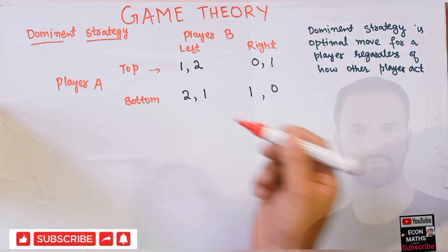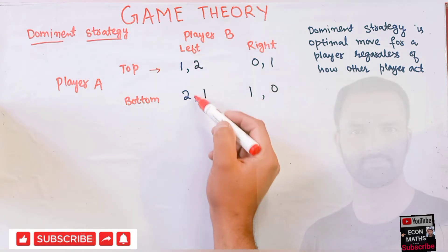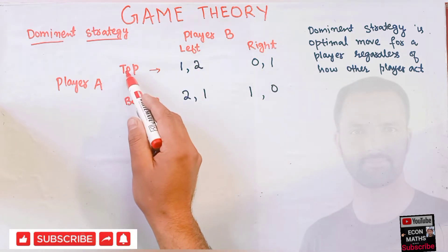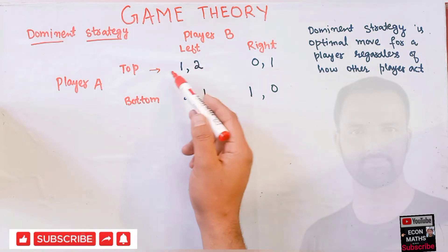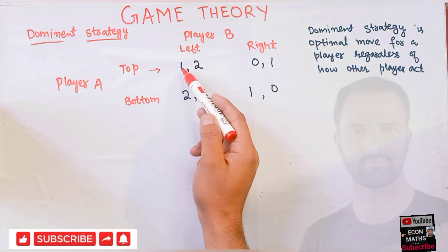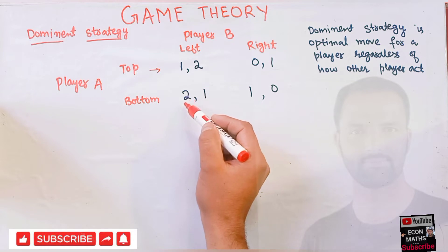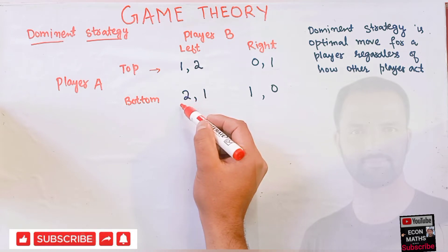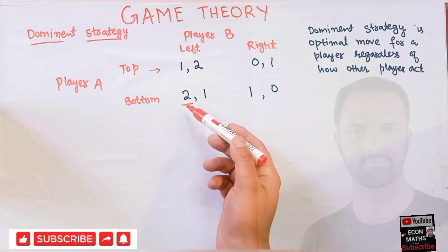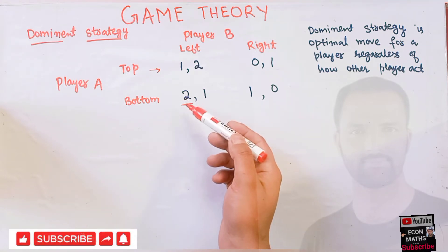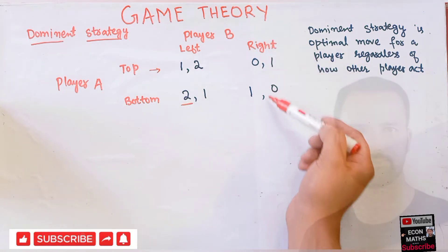Let us suppose player B chooses left. If player B chooses left, player A has two options: either to go top or to go bottom. If player A goes top he gets a payoff of one, and if he goes bottom he gets a payoff of two. So obviously player A will choose bottom because it gives him more payoff than going for top.